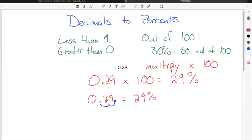Now the shortcut of moving the decimal two times to the right is because you're multiplying times 100. And when you multiply by 100, because 100 has two zeros, the zeros are going to move the decimal point to the right two times. So one time for each zero. So the shortcut for converting decimals to percents is to just move the decimal two times to the right.